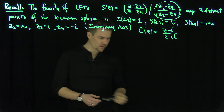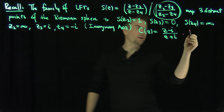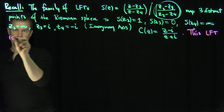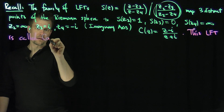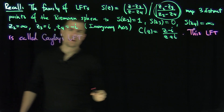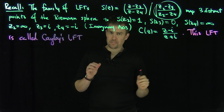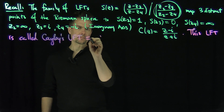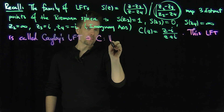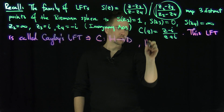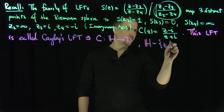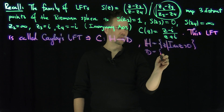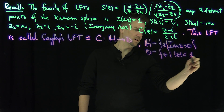Let's look at some properties of this Cayley mapping. This LFT is called Cayley's LFT, and it's oftentimes a very useful building block. In Cayley's LFT, C is a mapping from the upper half space H to the unit disk D. Here H is the set of Z such that the imaginary part of Z is greater than 0, and D is our unit disk, Z such that the modulus of Z is less than 1.